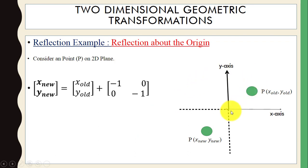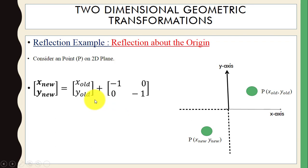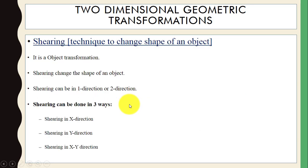Now we have reflection about the origin, which is perpendicular to the xy-plane. Here you can see the point, the origin, and the position of this point after reflection. This can be computed by multiplying the old coordinates with this matrix.